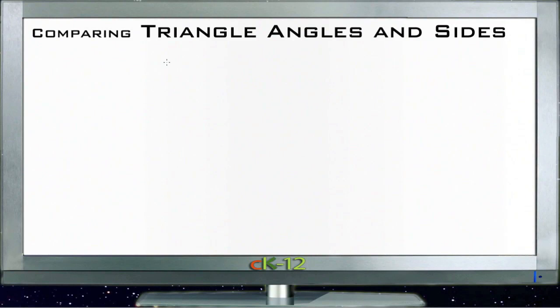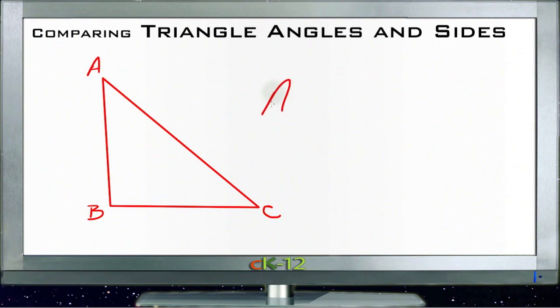This lesson is comparing triangle angles and sides. Let's suppose we have a triangle with vertices A, B, and C, and we know that AC is greater than BC.